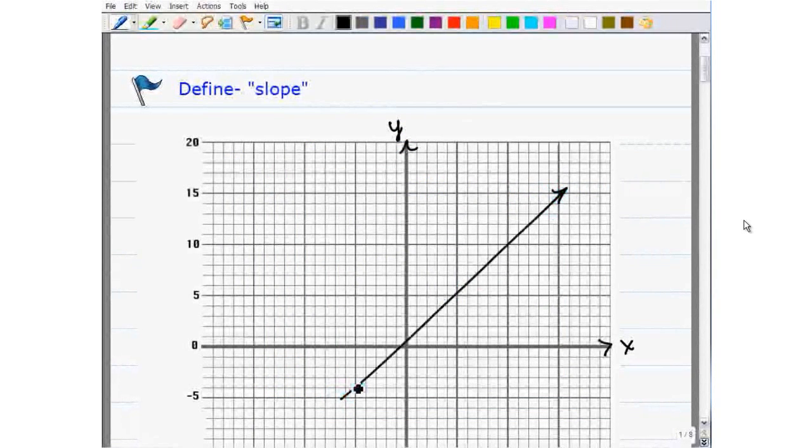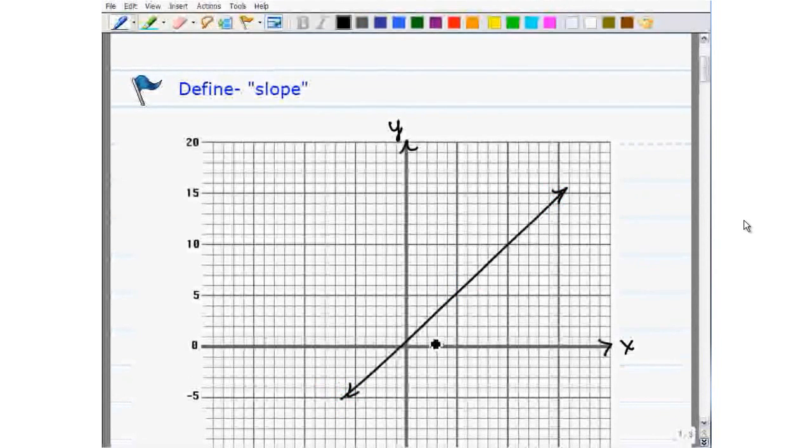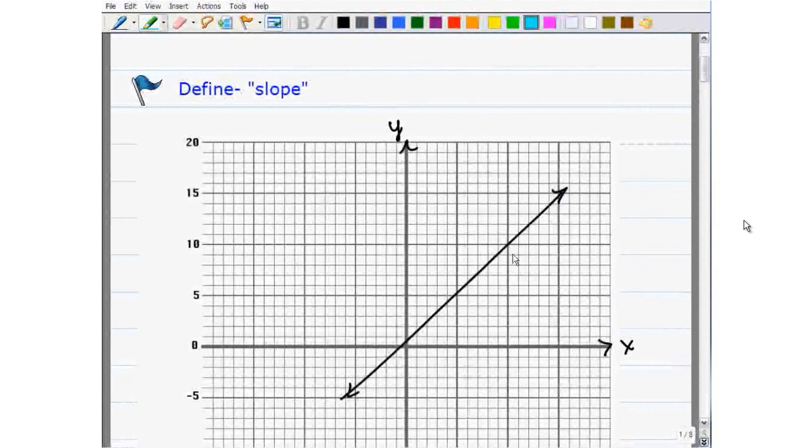Well, one way to describe the angle would be by using degrees. But another way, the way we're talking about here is to use something called slope.